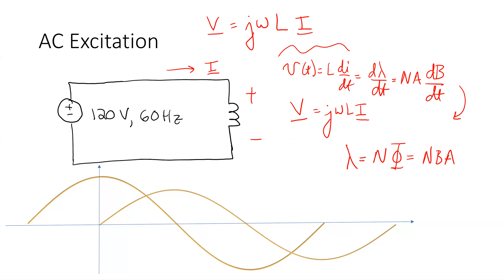So V equals jω·N·A·B. I show two waveforms here. If V is a cosine, that's our definition of what we start with. And this is what B of t should look like. There's a 90-degree phase shift between V and B — one is a sine and one's a cosine. When V is going through zero, B is at its peak and vice versa. That's a 90-degree shift.